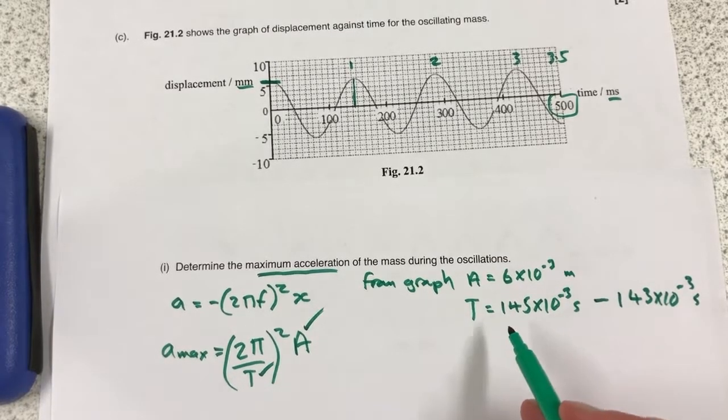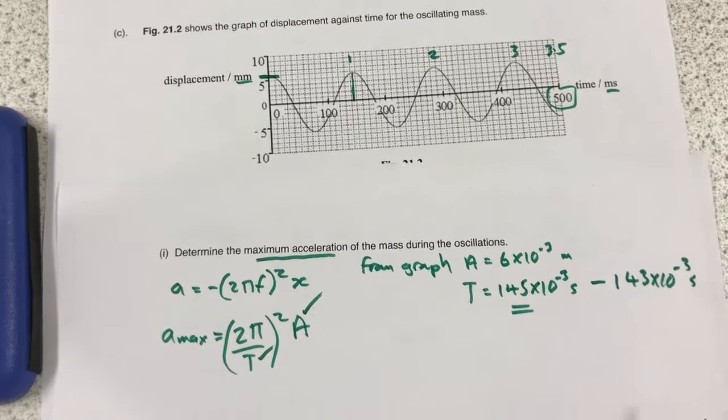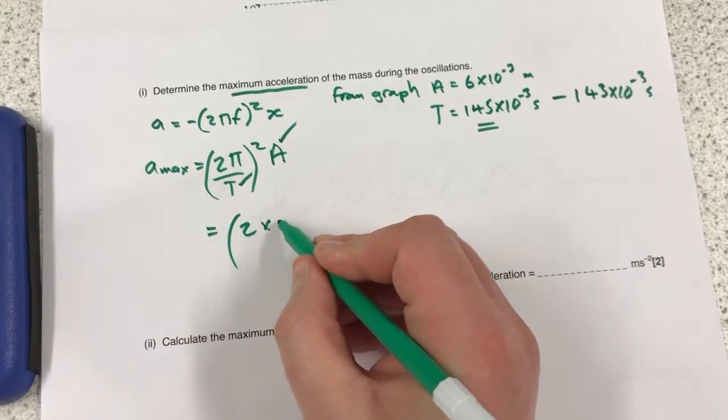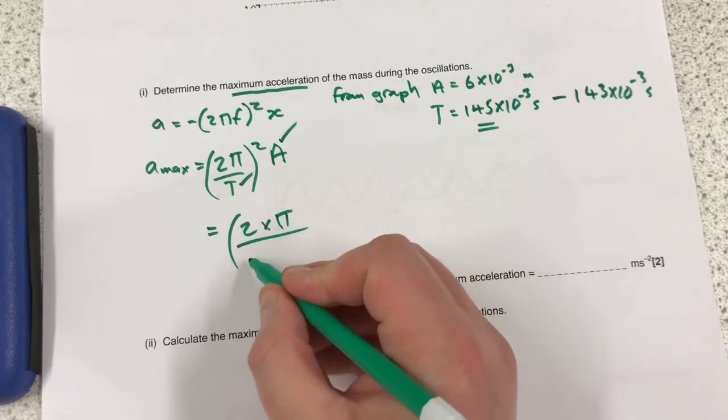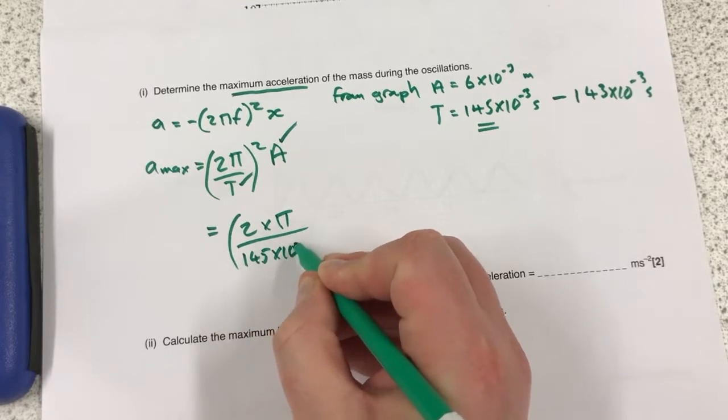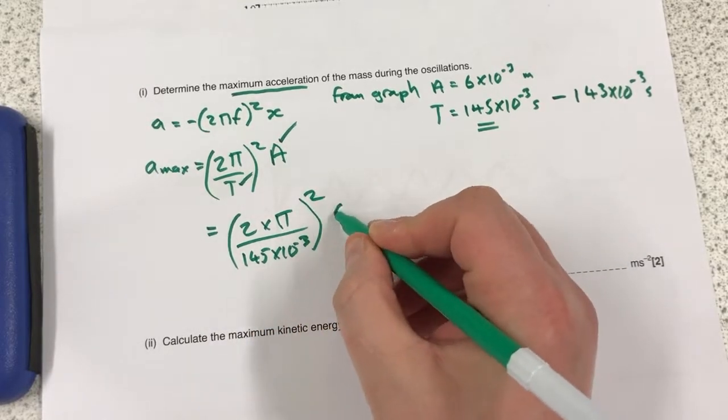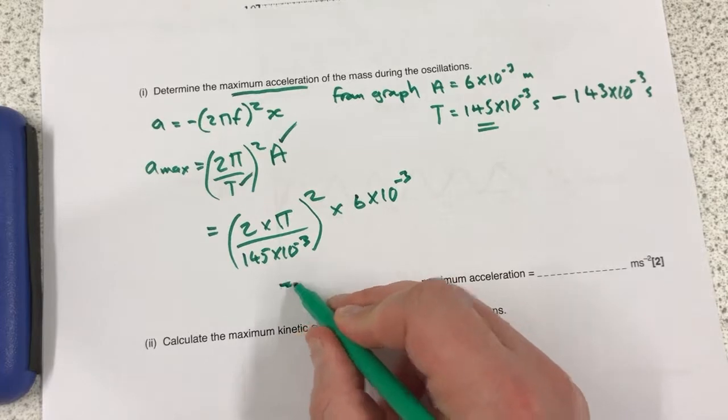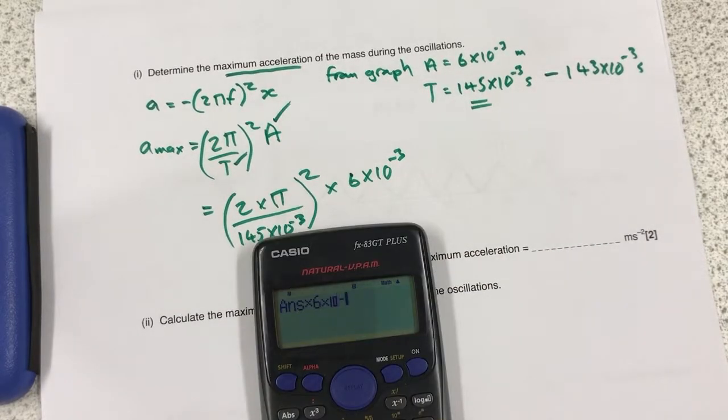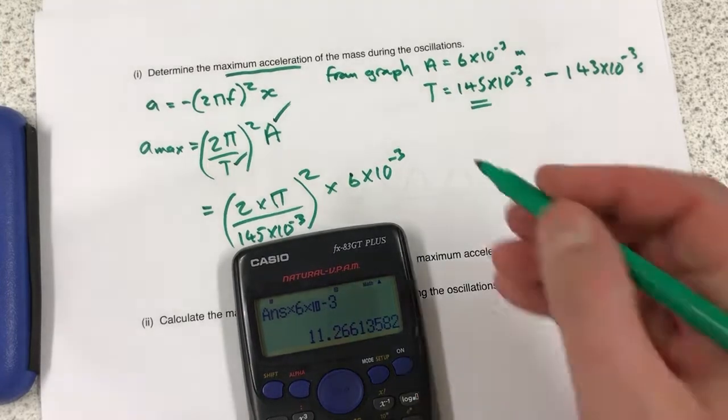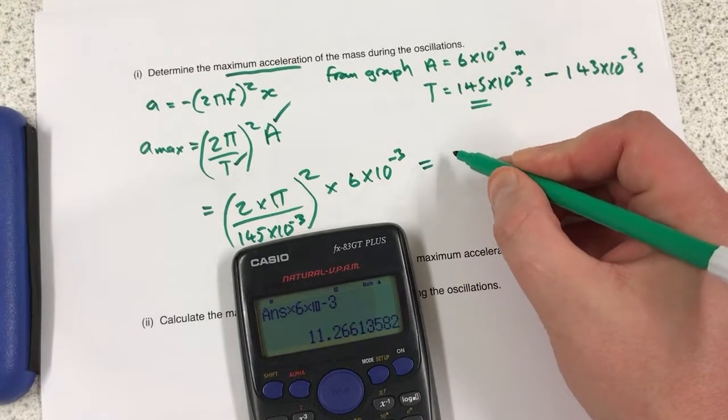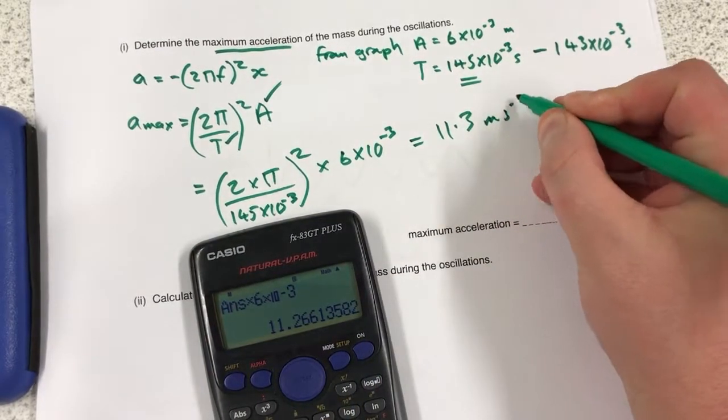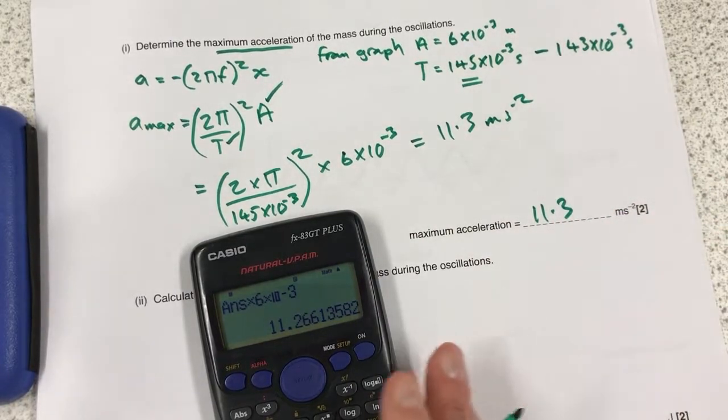So plugging these numbers now into this equation, we have open brackets 2 times pi divided by 145 times 10 to the minus 3, close brackets, square that. And times by 6 times 10 to the minus 3. So on my calculator, I'll just turn to the minus 3 equals. And I have my maximum acceleration here of 11.3 meters seconds to the minus 2.